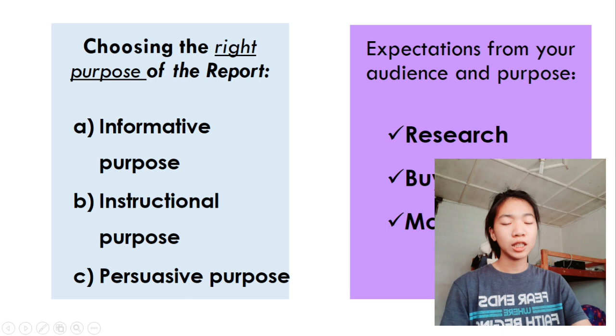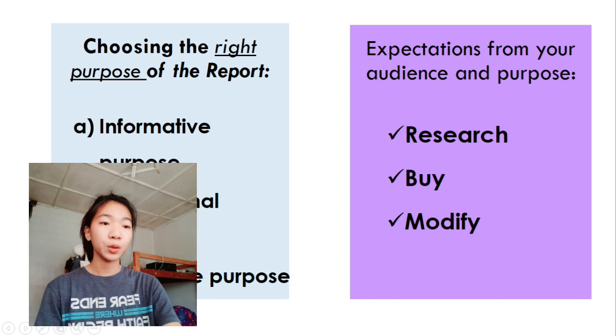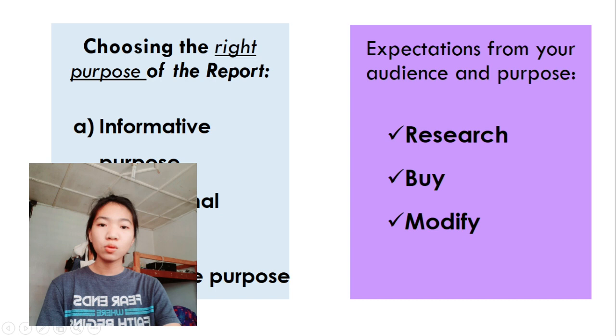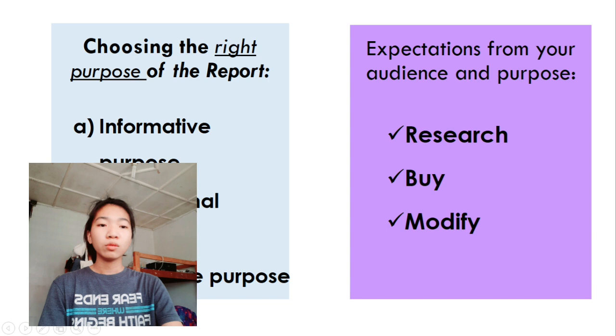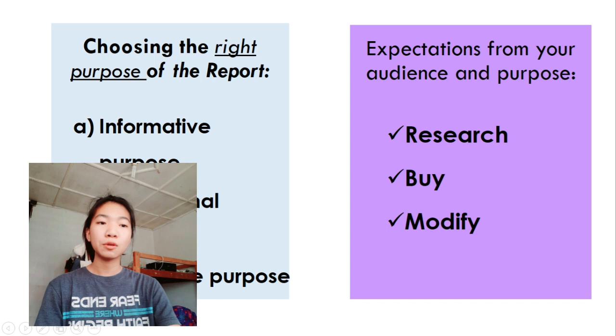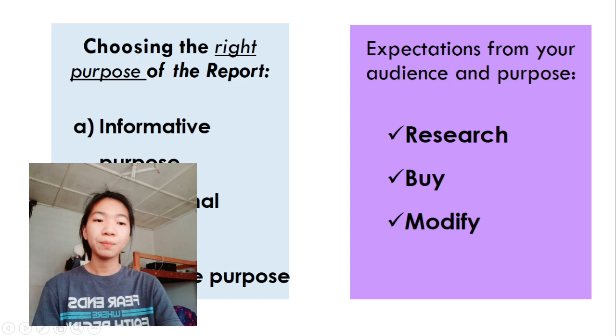Once you know your specific audience on specific purpose, you will know what to expect from them. They can research, buy, or modify. The writer's purpose is to make the audience do some research on the types of information needed for a specific purpose. Your readers can buy too. The writer's purpose is to make the audience buy a particular working device, system, or a product. They will modify your product. The speaker's purpose is to promote change in the use or construction of sound system or device for a variety of reasons. For instance, the efficiency, reliability, and safety.